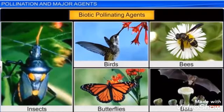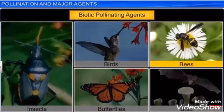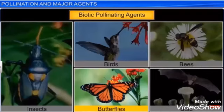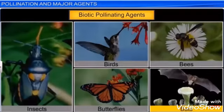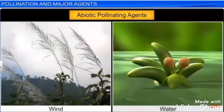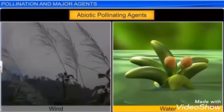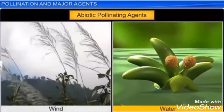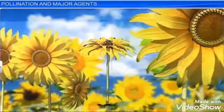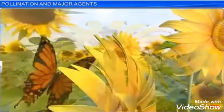Pollination can be carried out by biotic agents such as insects, birds, bees, butterflies, or bats. There are also abiotic pollinating agents in which wind helps transfer pollen grains, and water helps transfer pollen grains in aquatic plants. This completes the topic of pollination.